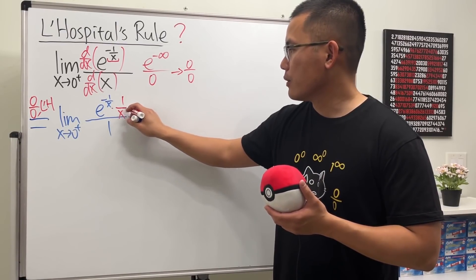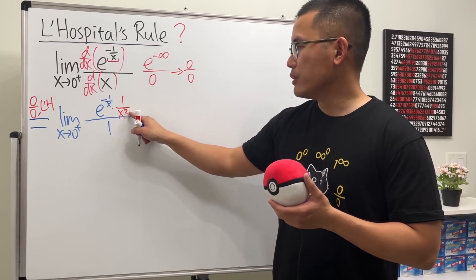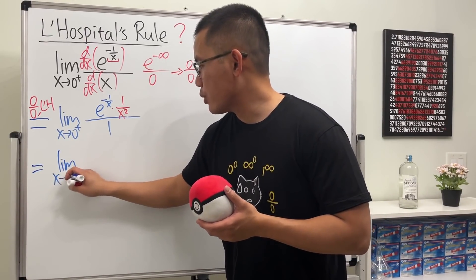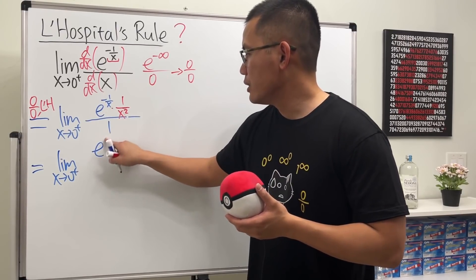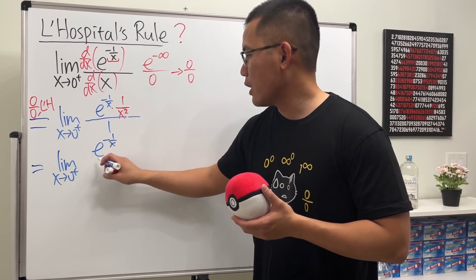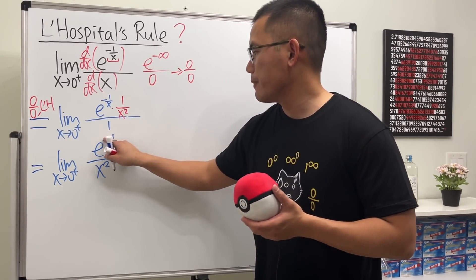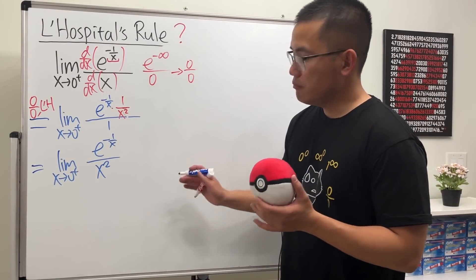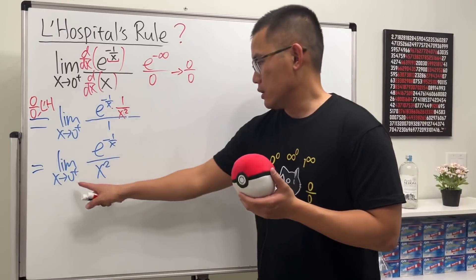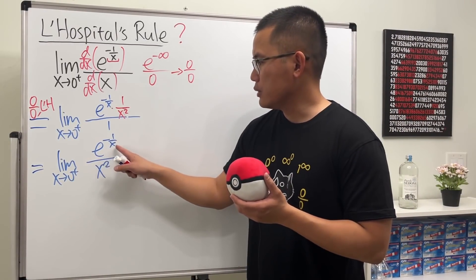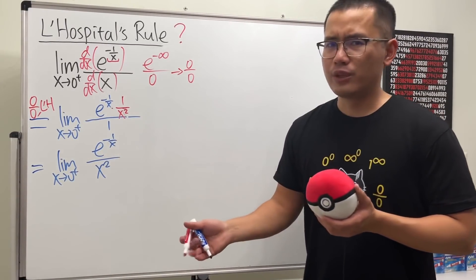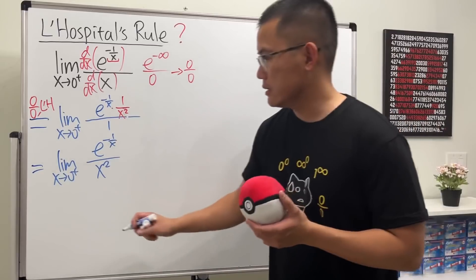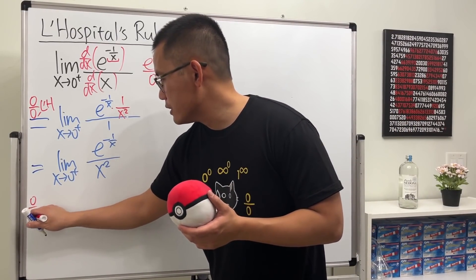The 1 on the bottom doesn't matter, so I'll put the x squared on the bottom. We get the limit as x approaching 0 plus of e to the negative 1 over x power over x squared. When we put 0 plus in here, it's another 0 over 0 case — but don't worry, L'Hôpital's rule should still work.